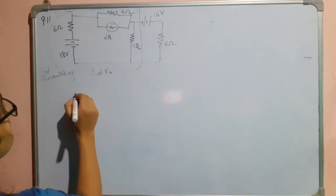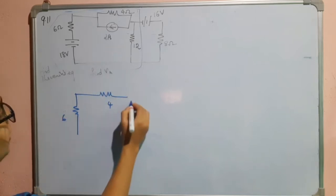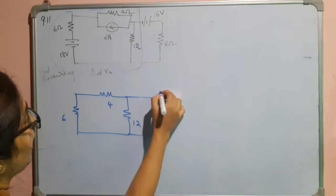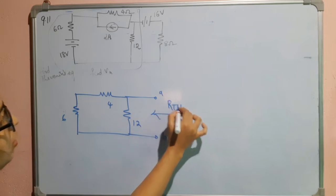Here it is shorted, so only 6 ohm and here the current source is open, so only 4 ohm and here the 12 ohm resistor and here the terminals we can consider A and B. We have to find RTH from this position.